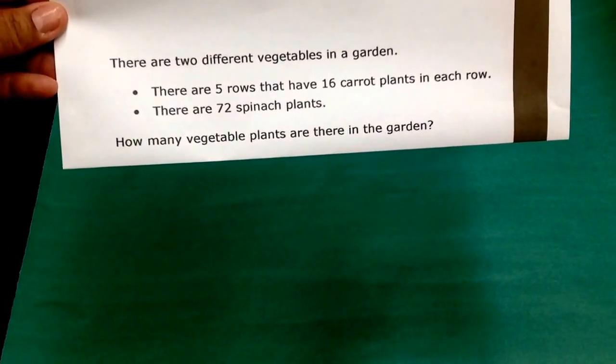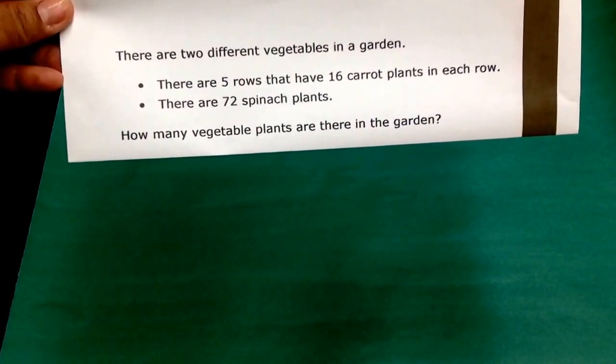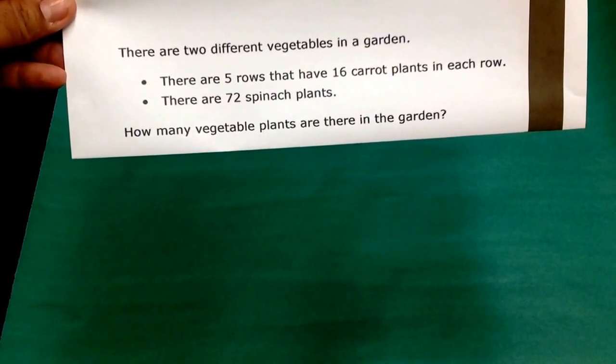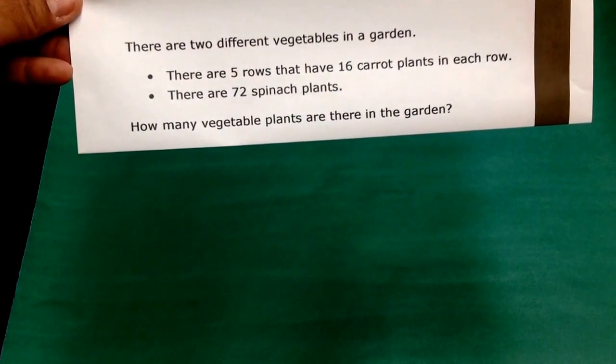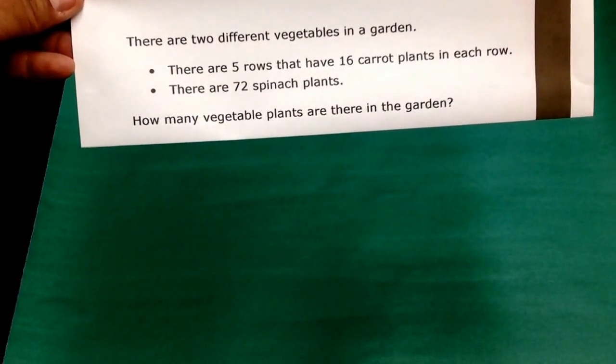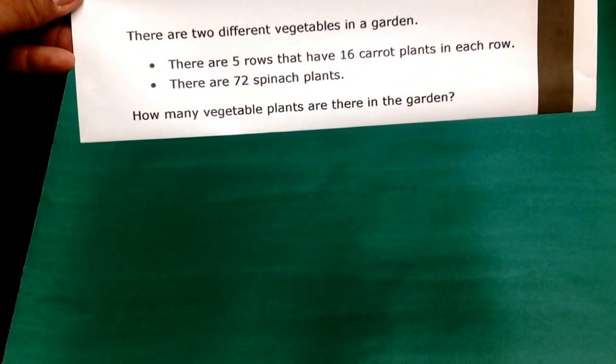There are two vegetables in a garden. There are five rows that have 16 carrot plants in each row. There are 72 spinach plants. How many vegetable plants are there in the garden?